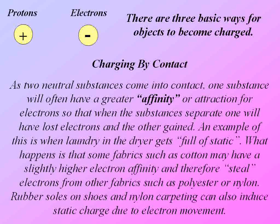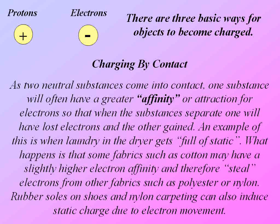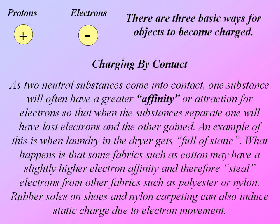An example of this is when laundry in the dryer gets full of static. What happens is that some fabrics such as cotton may have a slightly higher electron affinity, and therefore steal electrons from other fabrics such as polyester or nylon.